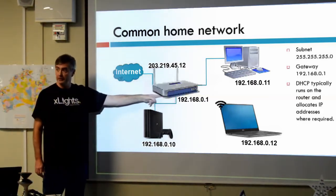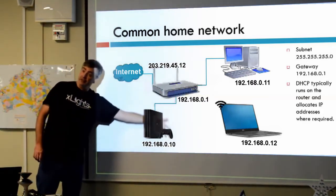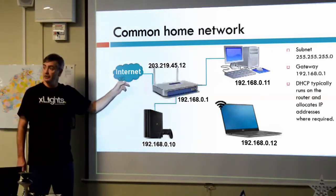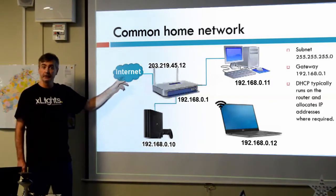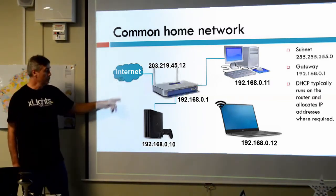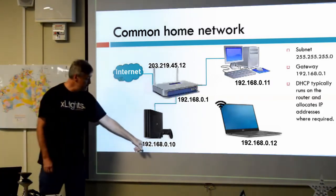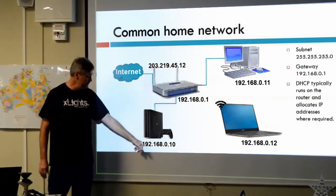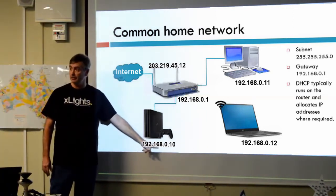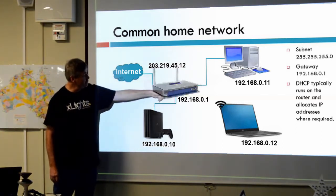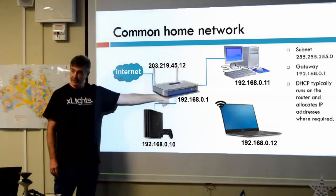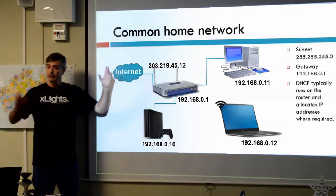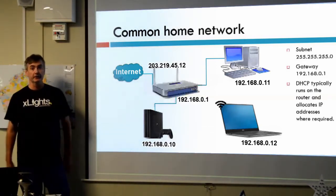The router has two IP addresses — one facing into your home network, and another IP address allocated by your ISP. So when you try and send a packet to Google, it has an IP address that's not 192.168.0.x, so that packet is sent to your router. The router realizes that's not in my network, so it sends it out to the internet, and your ISP takes care of routing it.